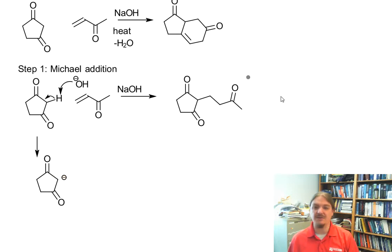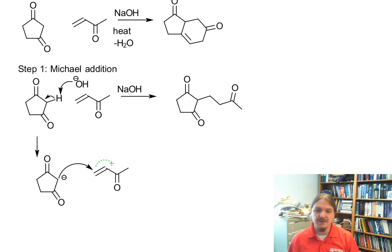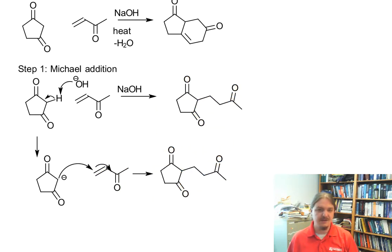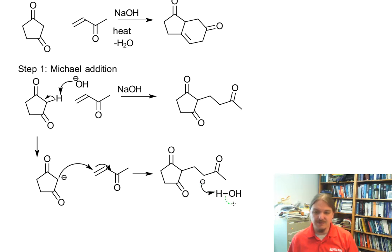Now this enolate is a nucleophile, and you're looking for something that can be an electrophile. We have this other carbonyl compound. It's electrophilic at two places, but 1,3-dicarbonyl compounds are good Michael donors, so they will react primarily at the beta position. You will form the enolate anion intermediate first, and then the enolate anion will pick up a proton from water, giving us the neutral product.